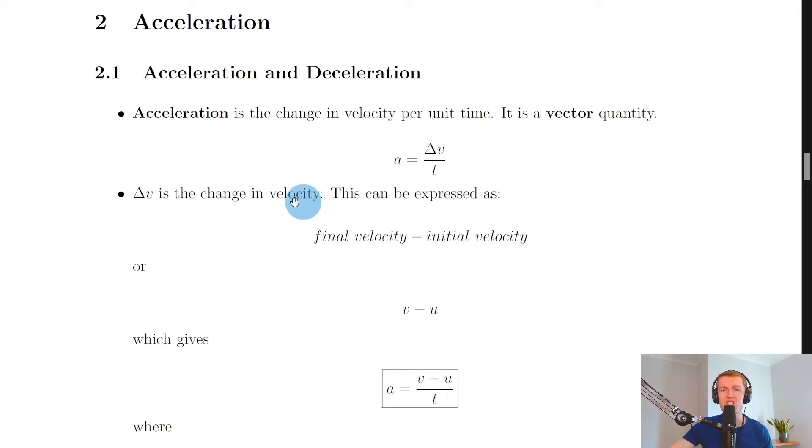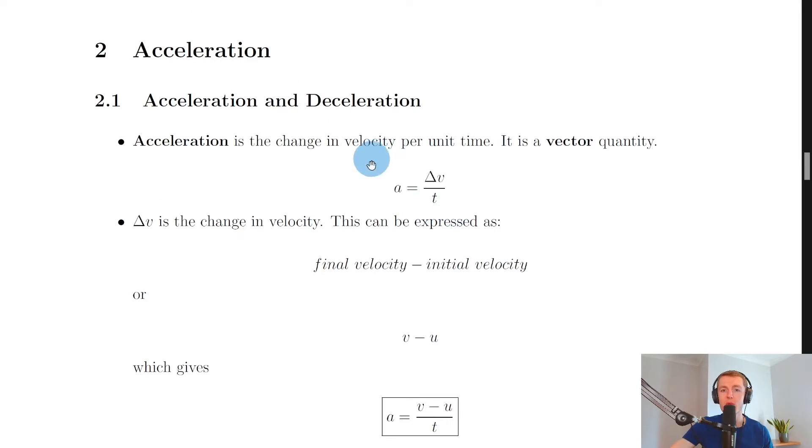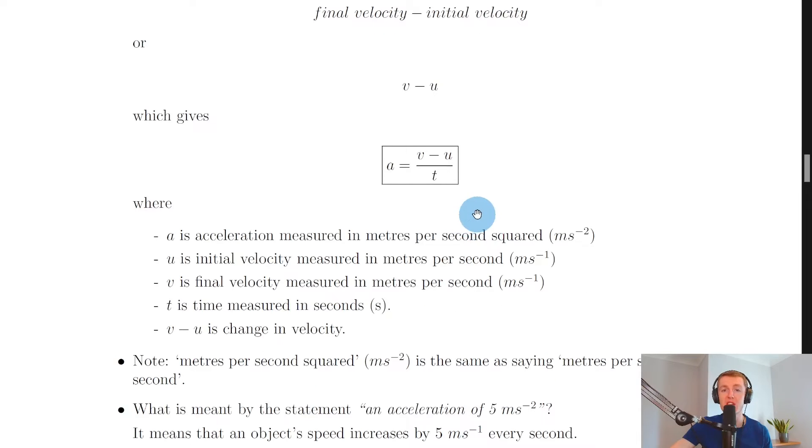But we can further express the change in velocity delta v as final velocity minus the initial velocity. Or in symbol form we have v for final velocity and u for initial velocity. So if we rewrite this in terms of the v minus u then we have the acceleration equation which is a equals v minus u divided by t.